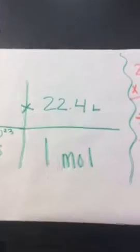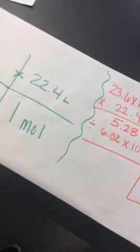And then 22.4 liters over 1 mole, and then what you want to do is cross this out, this out, and the moles out too.